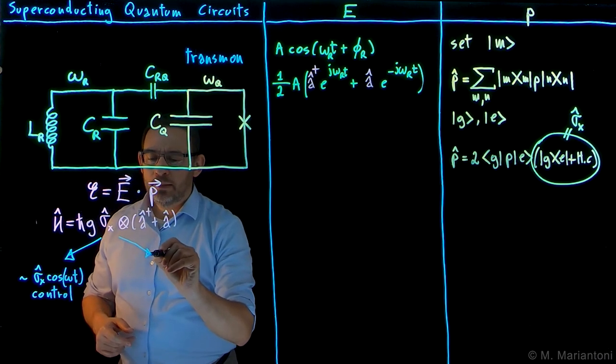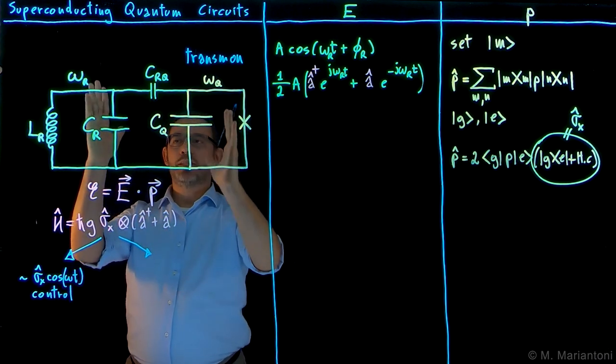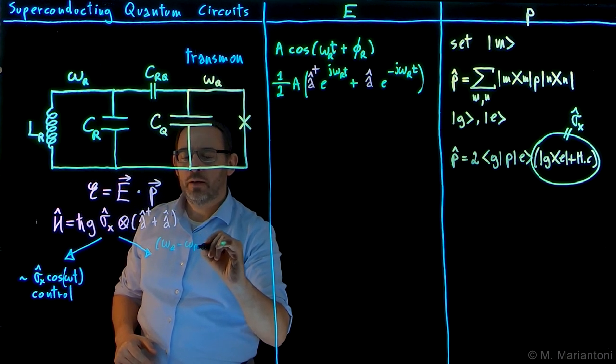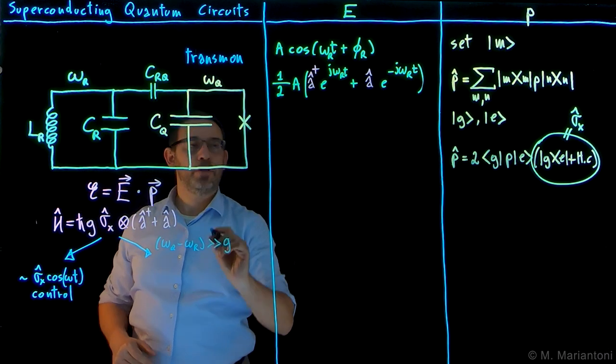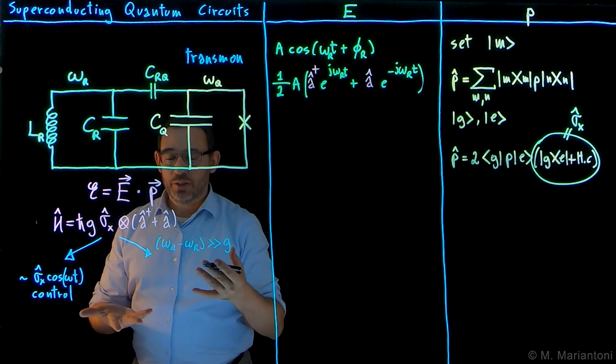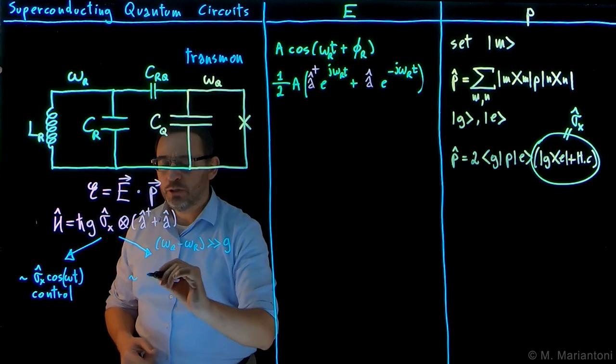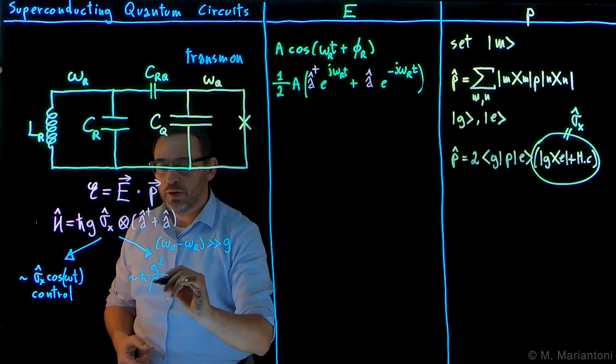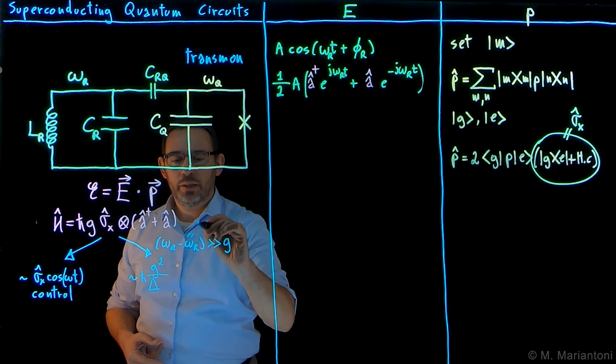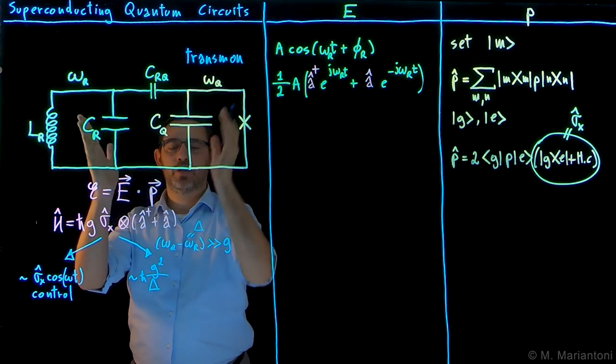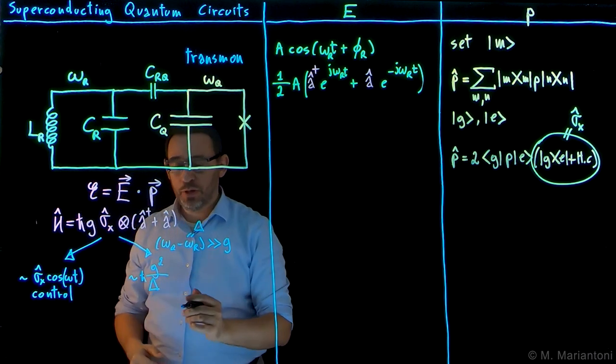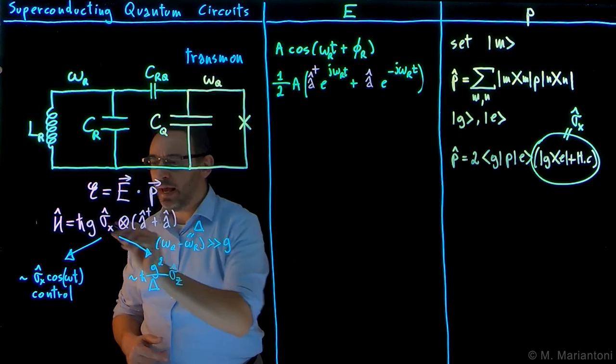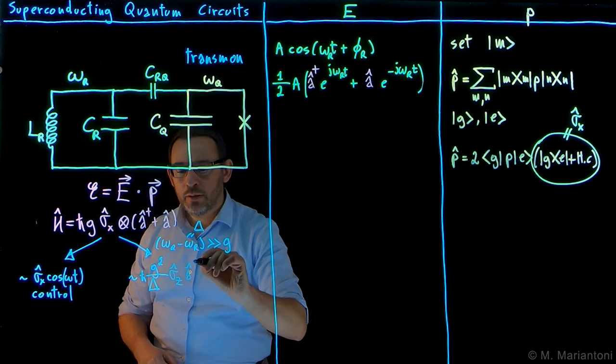The other possibility is when we set the two objects to have a difference in frequencies, omega q minus omega r, much larger than the coupling coefficient g. In this case, we can perform a Taylor series, which allows us to write down this interaction Hamiltonian, effectively, as something like h bar g square over delta, where this quantity is delta, the detuning between the resonator and the transmon. This is nothing but second order perturbation theory, g square over delta, you should have seen this in quantum mechanics, times sigma z, sigma x now becomes sigma z here, times a dagger a.